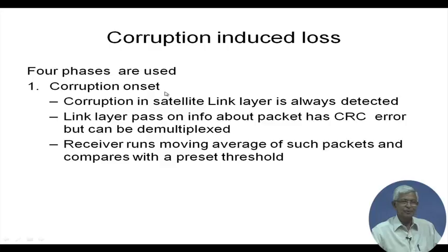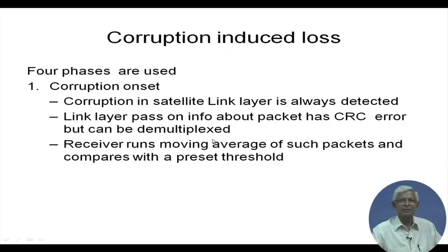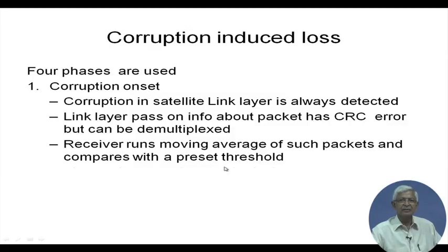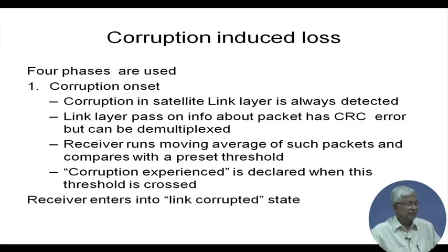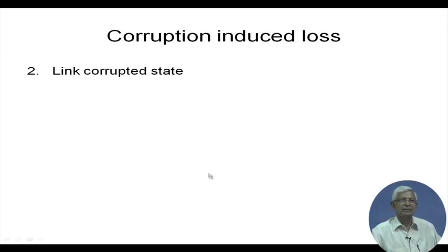First, the onset of corruption is identified by the link layer, which passes information to the higher layer indicating a CRC error, but the packet can still be demultiplexed and used. The receiver runs a moving average and sets a threshold; once that threshold is exceeded, it declares that corruption is experienced and transitions into the link corrupted state.